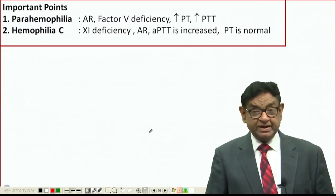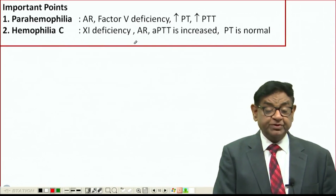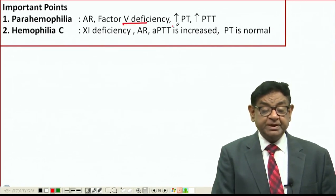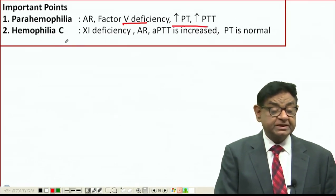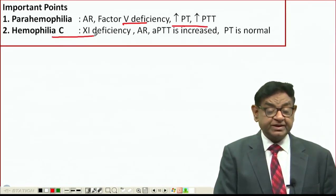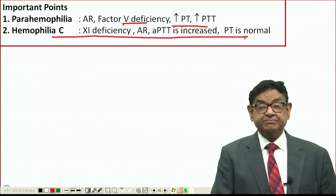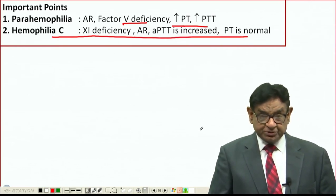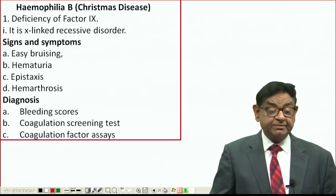A few additional points: para-haemophilia is a recessive disorder due to Factor 5 deficiency, with prolonged PT and possibly prolonged PTT. Haemophilia C is due to Factor 11 deficiency — recessive, PTT is increased, PT is normal. These are additional conditions beyond Haemophilia A and B.